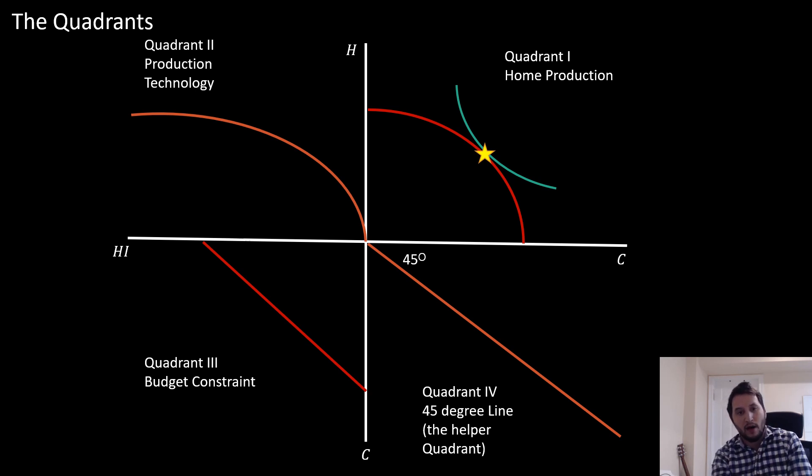The second quadrant is our production technology, which takes in the health input and produces a health status term.